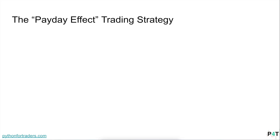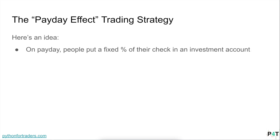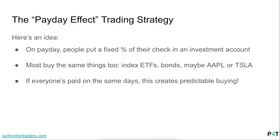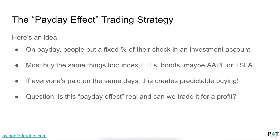Today's video, I want to show you a super easy strategy to automate part-time as a beginner algorithmic trader. Here's the idea: on payday, people are going to put a fixed percent of their check in an investment account. In most cases, people buy the same things — index ETFs, maybe bonds, maybe favorite stocks like Apple or Tesla. And if everyone's paid on the same days, this creates a predictable buying effect. The question is: is there a payday effect where we can get ahead of this predictable buying and trade it for a profit?